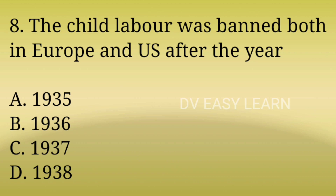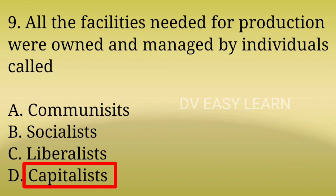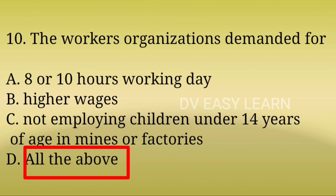8th Question: Child labor was banned in both Europe and the US after the year 1936. 9th Question: All the facilities needed for production were owned and managed by individuals called capitalists. 10th Question: The workers' organization demanded all of the above — an 8 or 10 hour working day, higher wages, and not employing children under 14 years of age in mines or factories.